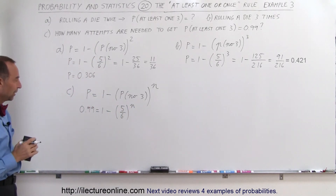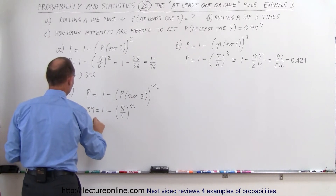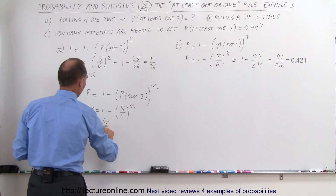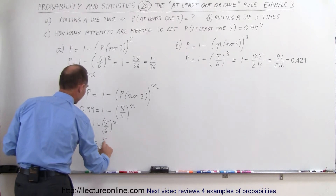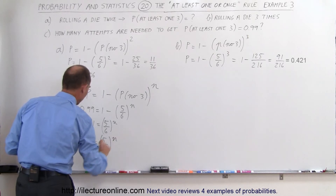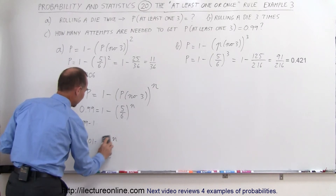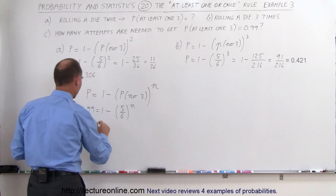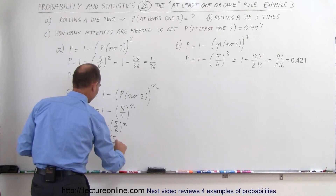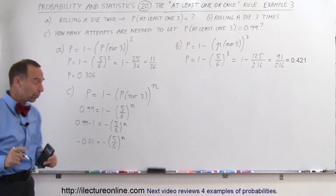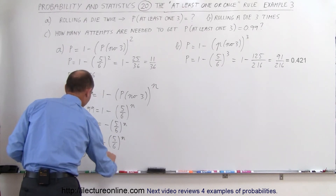Now we have to solve that equation for n. Moving the one to the other side, we get 0.99 minus 1 equals negative five-sixths to the nth power, giving us negative 0.01 equals negative five-sixths to the nth power. Multiplying both sides by negative one, we get 0.01 equals positive five-sixths to the nth power.